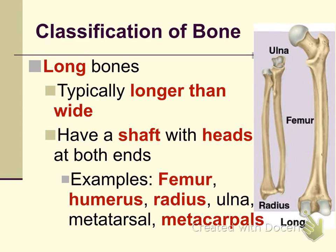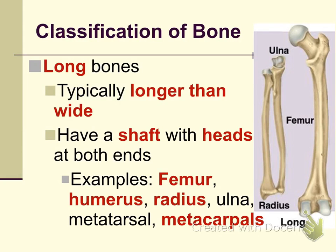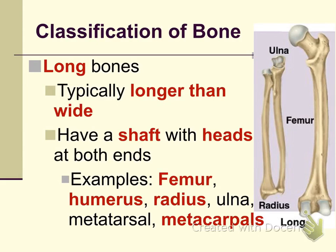Bones are classified according to their shape. Long bone classification means the bones are going to be longer in length when compared to their width. The typical structure includes a rounded portion called the head, and the long body of the bone called the shaft. Bones in the long bone category include the femur (thigh bone), humerus (arm bone), radius and ulna (forearm bones), metatarsals (foot bones), and metacarpals (bones in the palm of the hands).